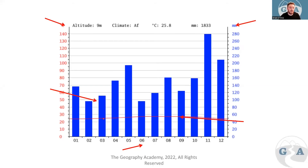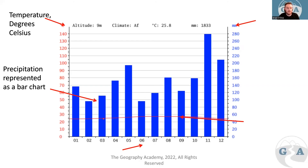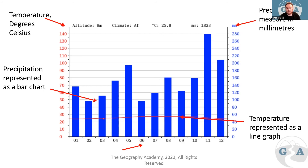In both areas you need to be able to read a climate graph. We have degrees Celsius on one axis and millimeters on the other. The red line graph represents temperature in degrees Celsius, while the blue bar chart represents precipitation in millimeters. The months of the year run along the bottom, from January through to December.